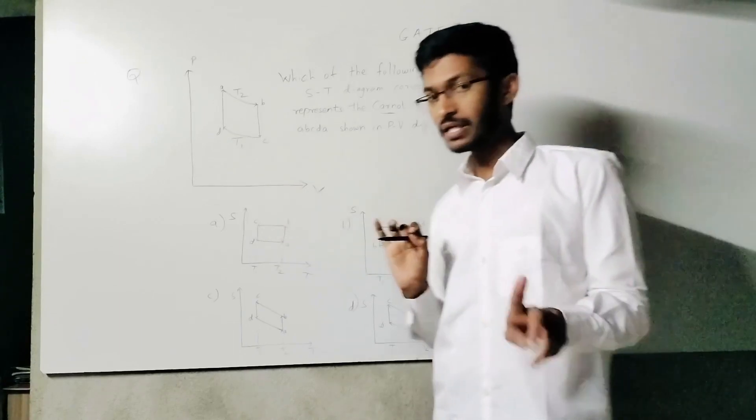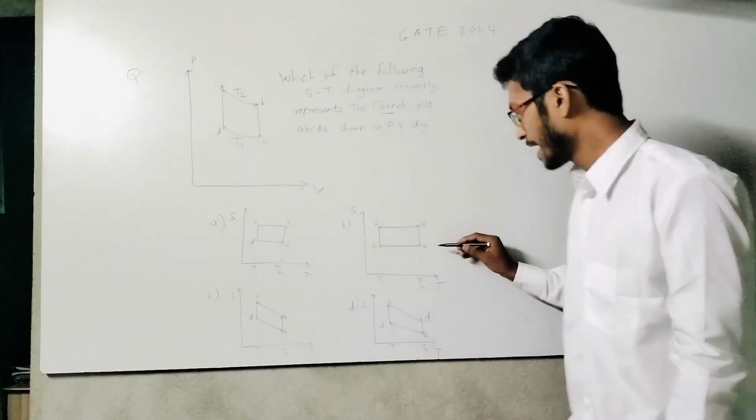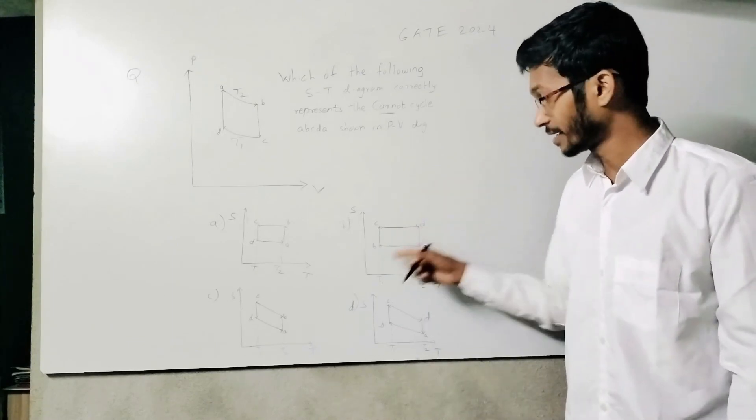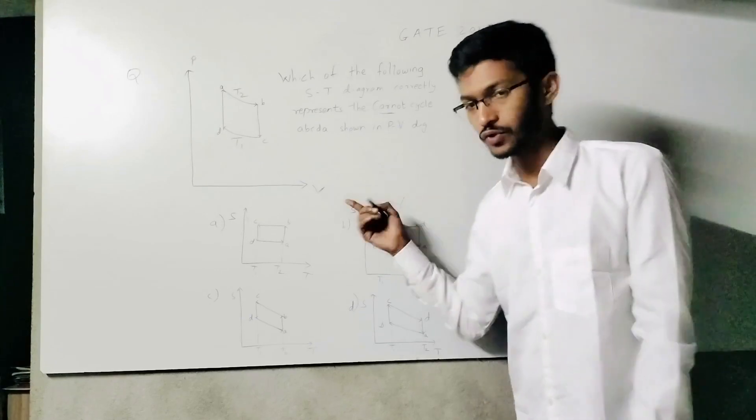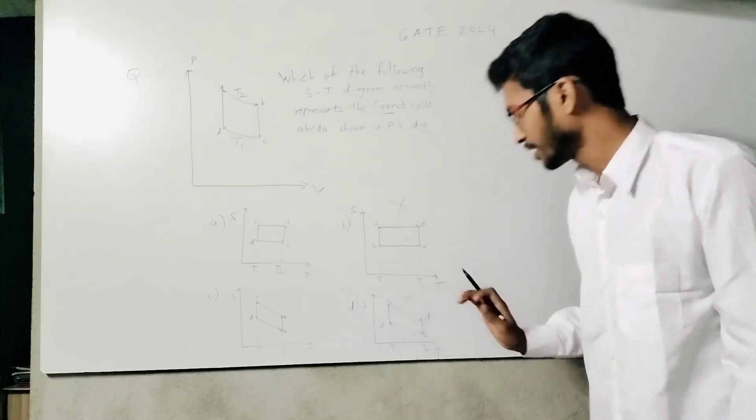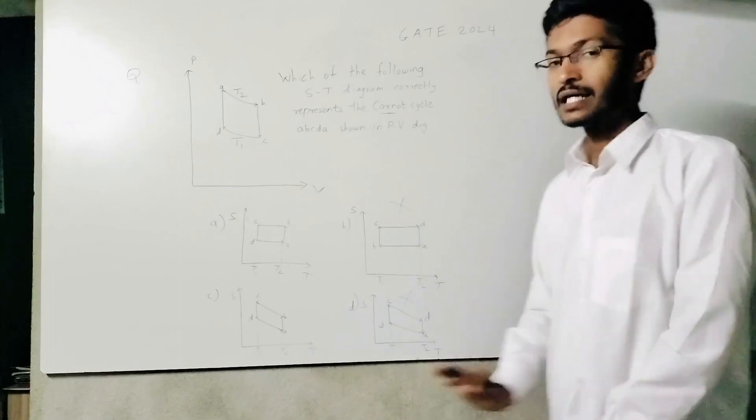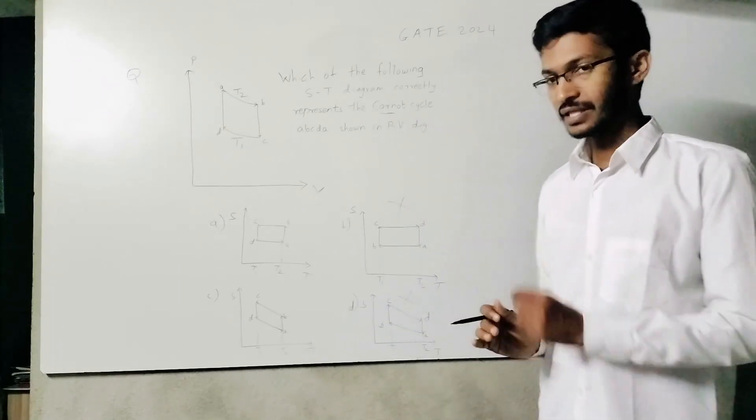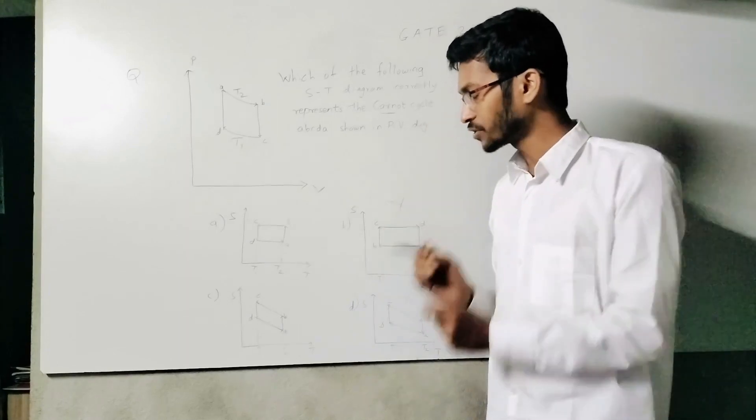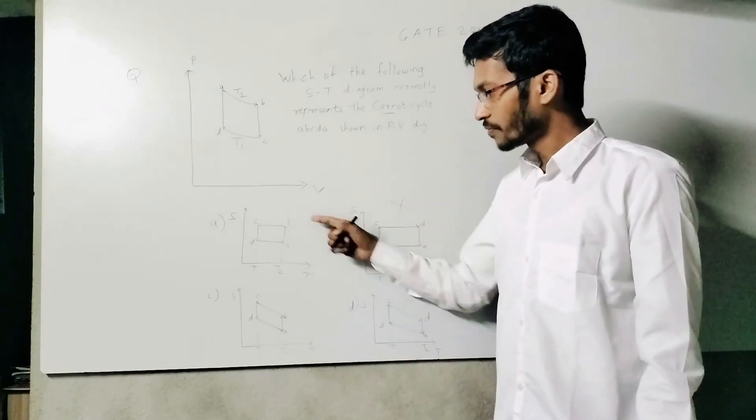So this can be correct. In other options, AB is not happening at the same temperature, so those options are incorrect. Similarly, options B and D are eliminated because AB and CD must be isotherms occurring at constant temperature. Now from this, which one should be the correct option?